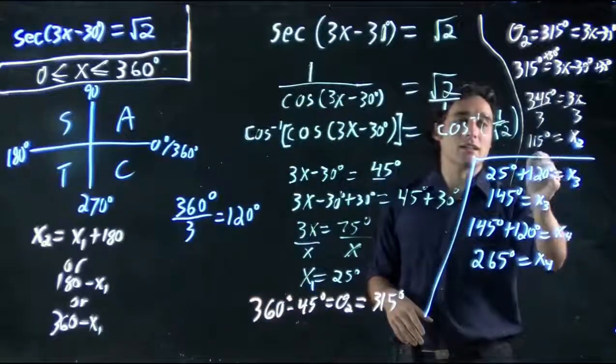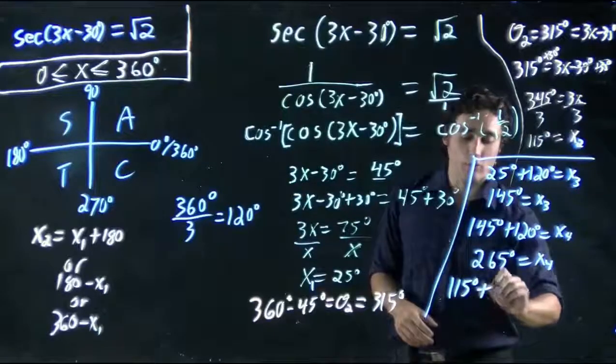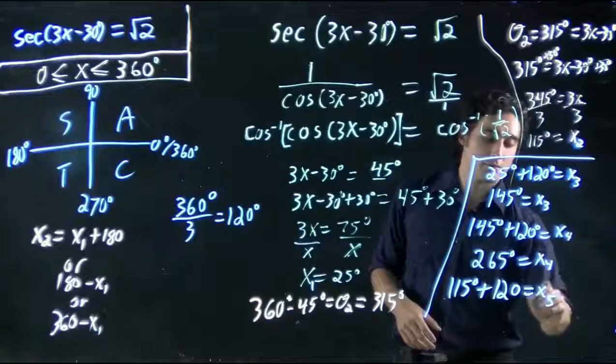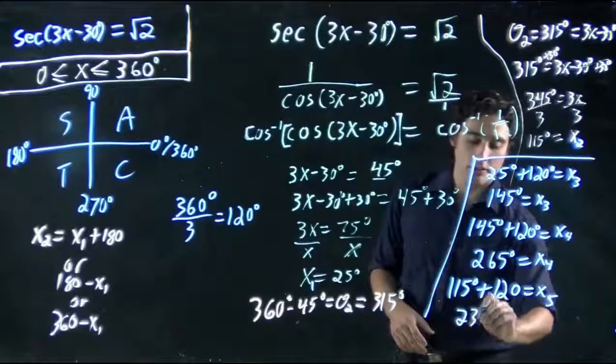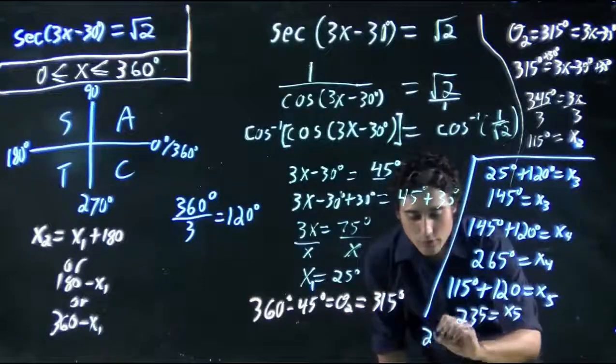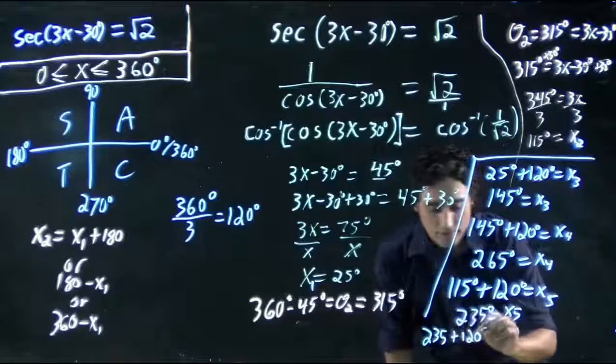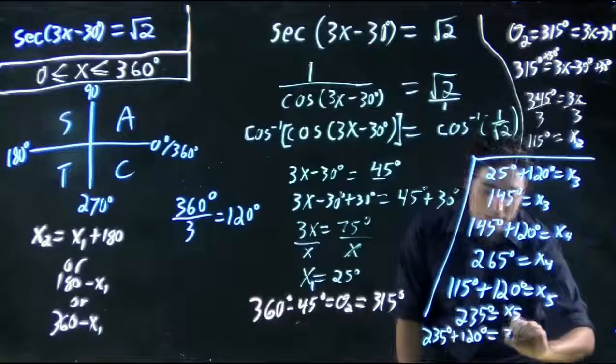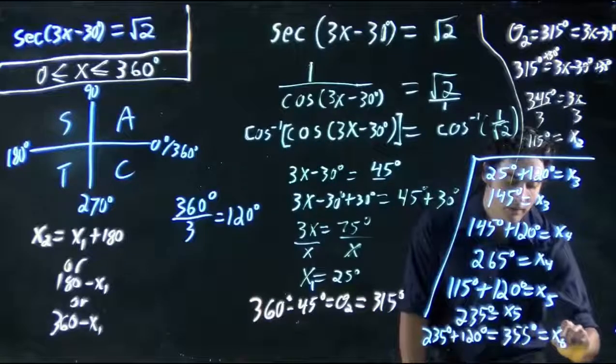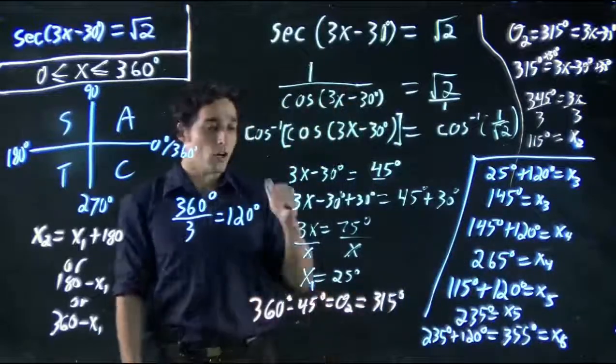And we can do the exact same thing to this solution we found. If 115 degrees is a solution, so would 115 plus 120. We can call that x5. So we got 235 equals a solution. Again, we could do 235 plus 120, which is the same as 355 degrees. And that would also be a viable solution. So we actually ended up with six solutions. I could keep going, but I'd be outside the range of interest.